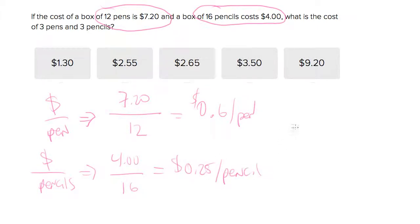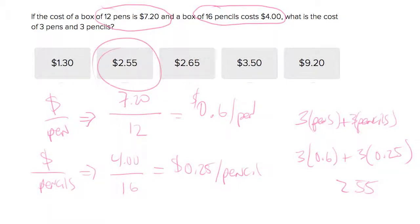So now what we want is three pens plus three pencils. That'll equal our total, so three times $0.60 plus three times $0.25 is $2.55, which is the second answer choice.